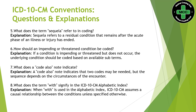How should an impending or threatened condition be coded? Whenever we code for any impending or threatened condition, the provider must specify that the impending condition actually occurred — for example, impending myocardial infarction occurred. Only then can you assign that code. If not, we go with the signs and symptoms that are documented.